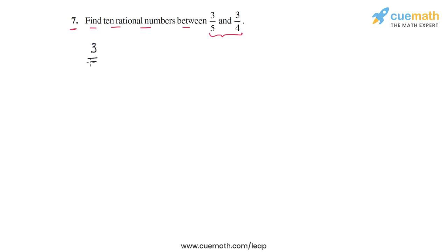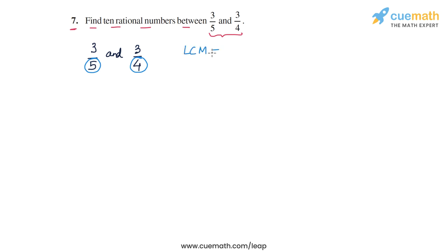The two numbers are 3/5 and 3/4, and their denominators are 5 and 4. We need to rewrite these two numbers as equivalent rational numbers with a sufficiently large common denominator. The LCM of 5 and 4 is 20.